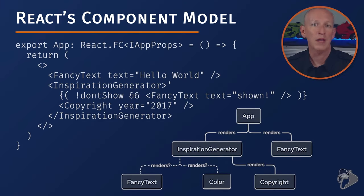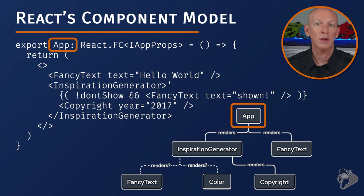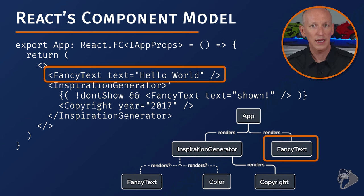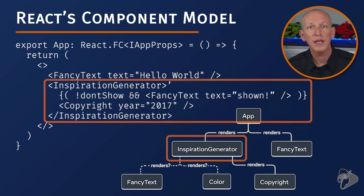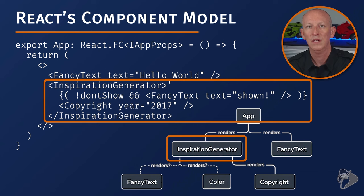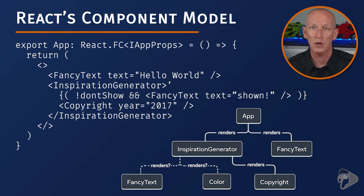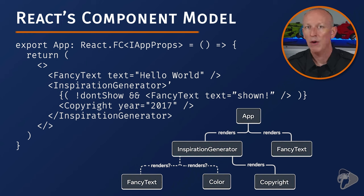Think of your entire application user experience as a UI tree where everything is a component. Components can be used to compose other components. For example, a root component called app can have child components like inspiration generator and fancy text. Fancy text accepts a string property like 'hello world' and displays it in the application. The inspiration generator contains other components and can conditionally show them — for instance, if a boolean value of 'don't show' is set to false, the fancy text component will display the text. This demonstrates how components can house other components and be conditionally rendered.